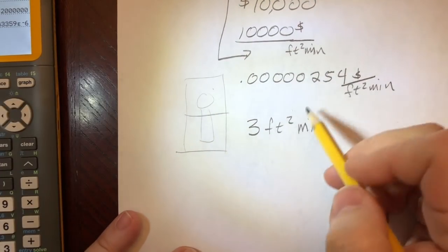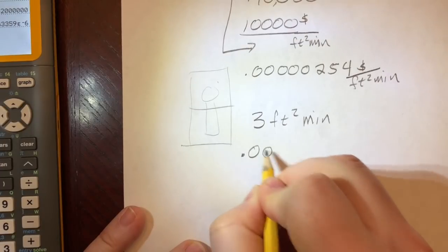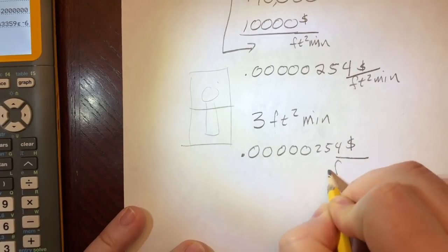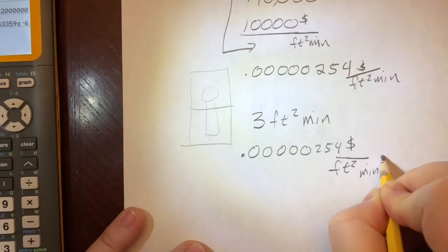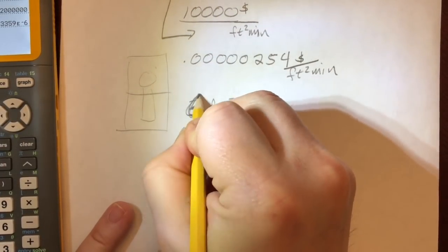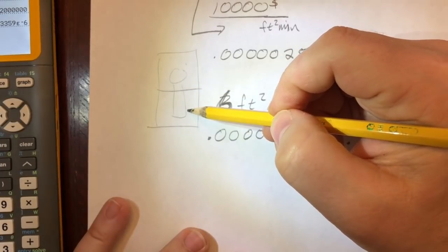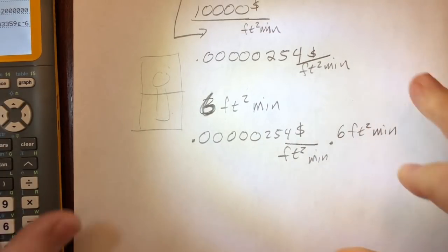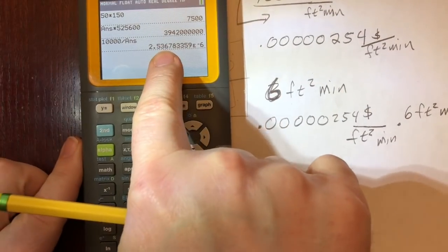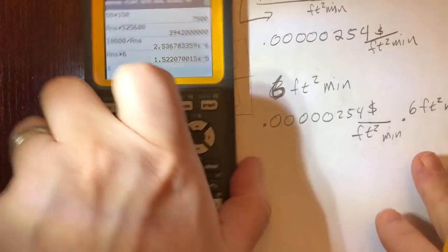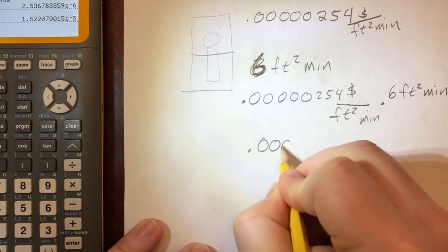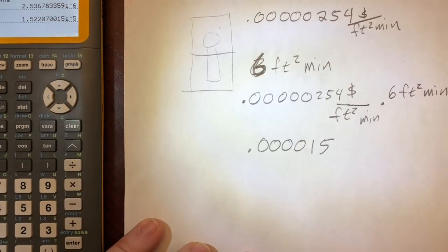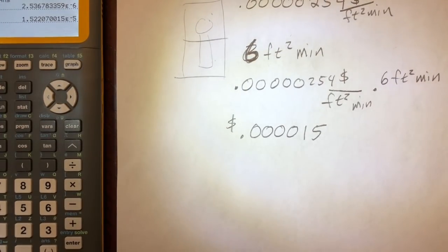So what do I owe him? Well, the units here are going to cancel out nicely if I multiply 0.0000002534 dollars per square foot-minute times what I used. This should be six because my dog takes up two units for three minutes. So that's this amount times six. I owe him 0.0000015 dollars.